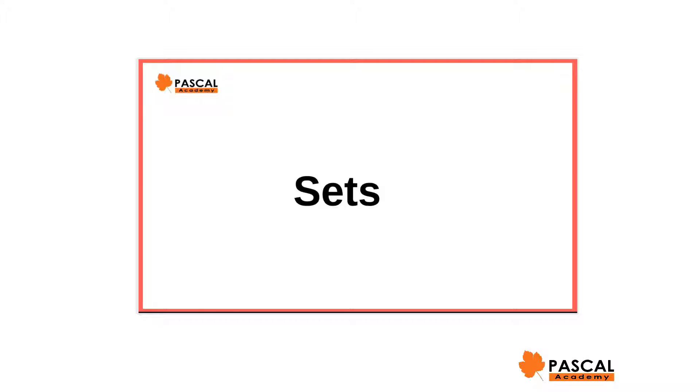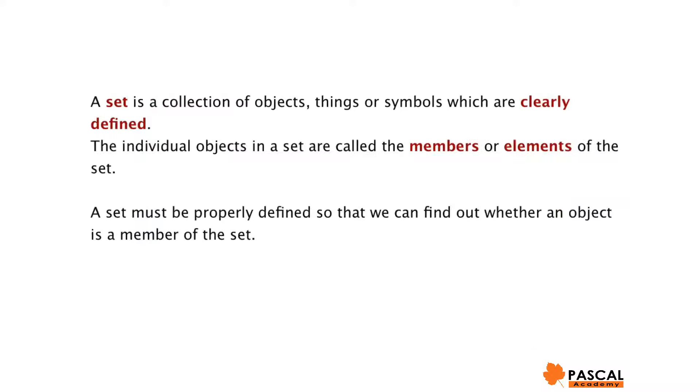Mathematics, grade 7, lesson 3. In our previous lesson, we defined a set as a collection of objects, things, or symbols which are clearly defined. The individual objects in a set are called the members or elements of the set. A set must be properly defined so that we can find out whether an object is a member of the set or not.